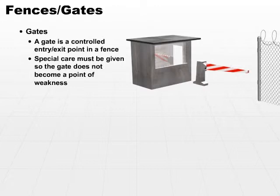Think back to all those many movies you saw in medieval times. You had the castle, and the enemy is besieging the castle. Where do they always go? They get their battering ram and go directly for the gate. That's why you want to make sure you control your gates.